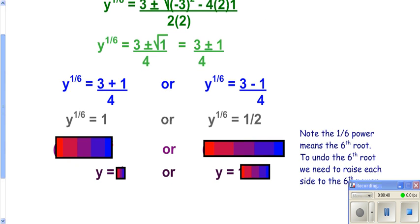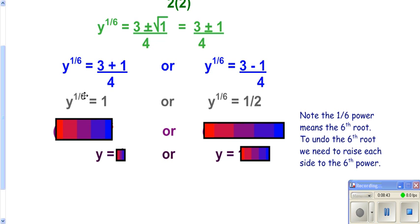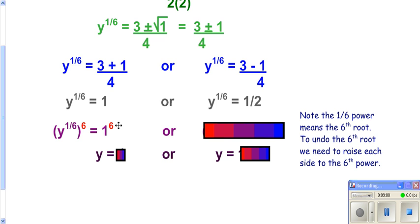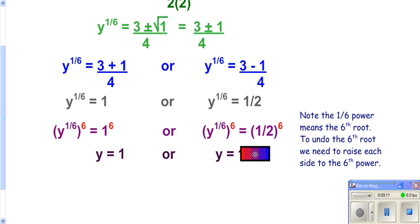We're trying to get just y to the first power. To undo the 1/6 power, you raise both sides to the 6th power — because when you have an exponent raised to an exponent you multiply, and 1/6 times 6 gives you 1. Raise the right side too. For y to the 1/6 equals 1: 1 to the 6th is 1. For y to the 1/6 equals 1/2: 1/2 to the 6th is 1/64 — wait, 2 to the 6th is 64. So your two answers are y=1 and y=64.